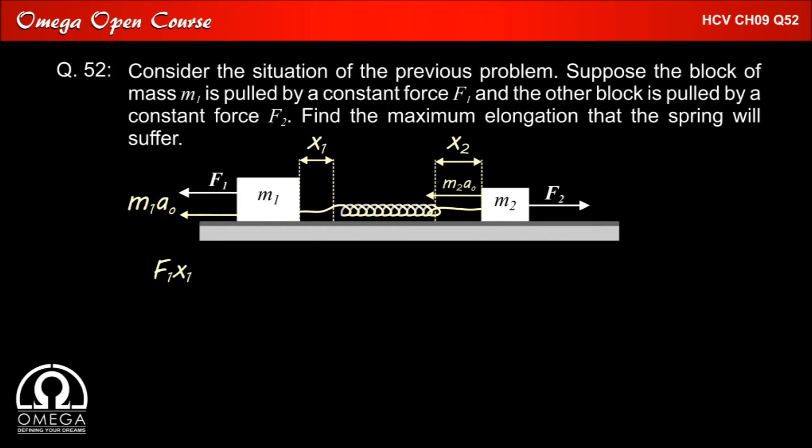Now let us write an equation using conservation of energy. As seen from our frame, initially both the blocks are at rest and at maximum elongation too both the blocks will be at rest. Therefore there is no kinetic energy anywhere and work done by all the forces must be equal to the energy stored in spring. The forces acting on M1 are F1 and the pseudo force M1 A0 and forces acting on M2 are F2 and pseudo force M2 A0.